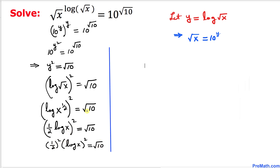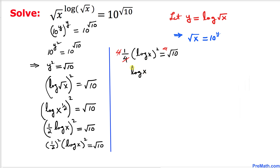Let's take care of this square: 1 over 2 squared is the same as 1 over 4. So we have 1 over 4 times log of x squared equals square root of 10. Let's remove the 4 by multiplying by 4 on both sides — the 4 and 4 cancel. So we get log of x squared equals 4 times square root of 10.